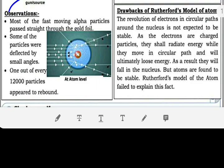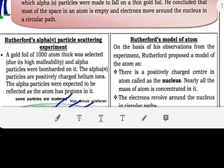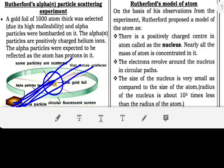That is, one out of 12,000 bounced back. Rutherford's model of atom. On the basis of his observation from the experiment, Rutherford proposed a model of the atom as there is a positively charged center in atom called as the nucleus.